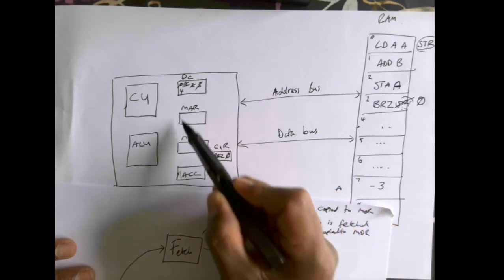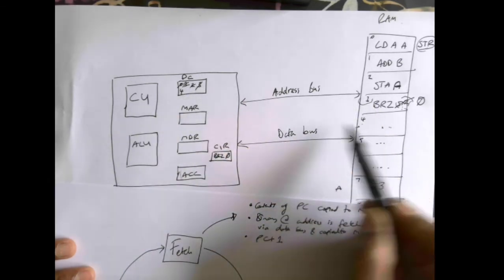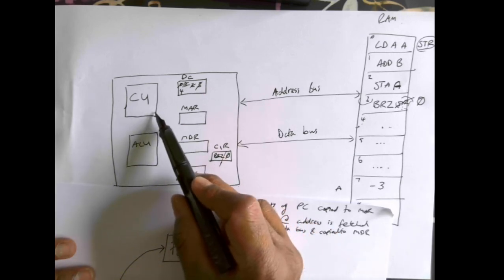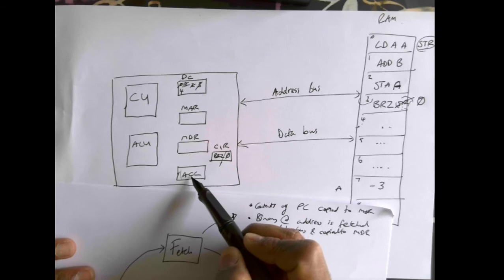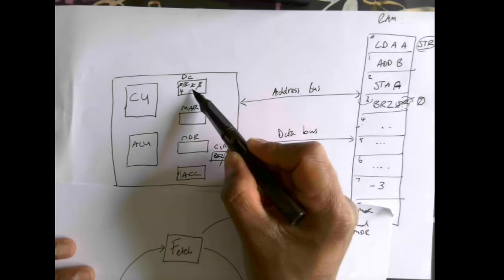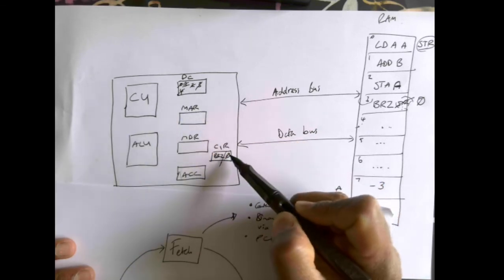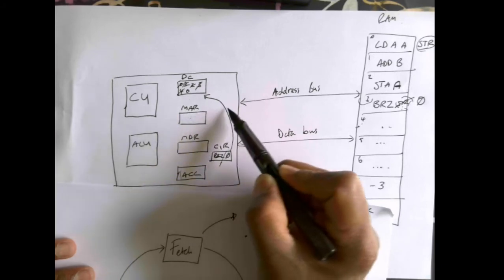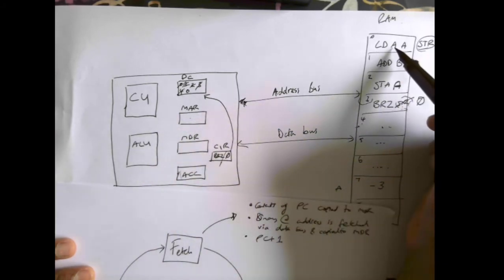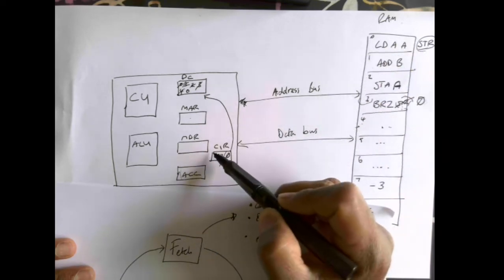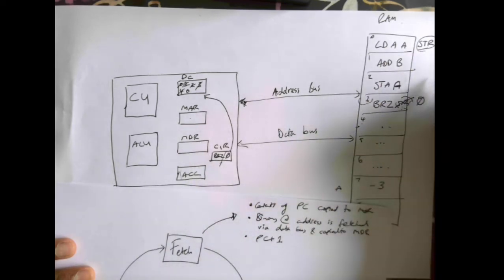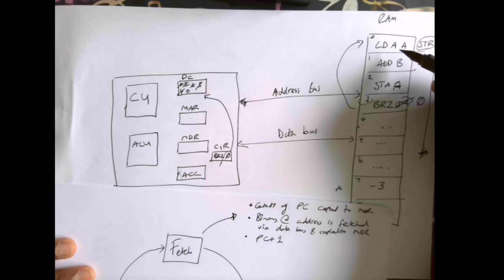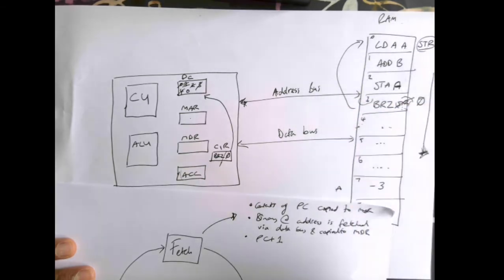That means instead of going to instruction four as normal, I need to go back to the beginning of my program. When BRZ STR was copied down, remember the symbolic address STR was replaced with the physical address — memory location zero. So the current instruction register holds 'BRZ 0'. Normally in the fetch-execute cycle the PC went up by one from three to four, but the control unit sees that opcode and says 'I need to go back to instruction zero' — so that operand gets sent back up into the program counter.